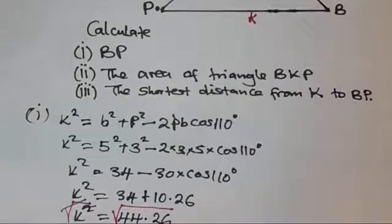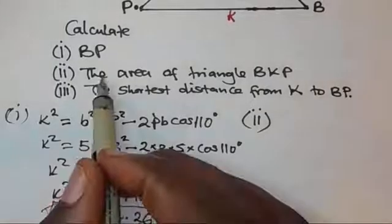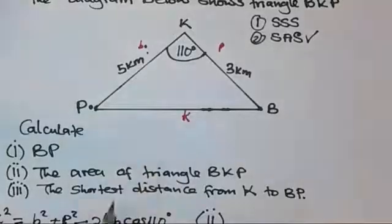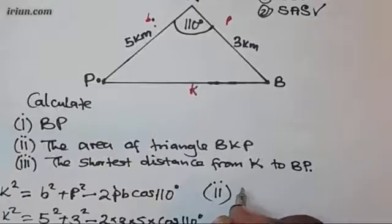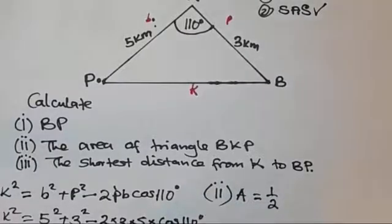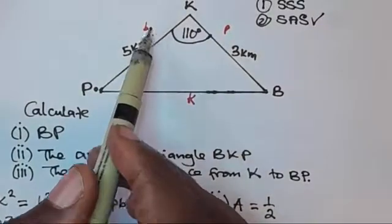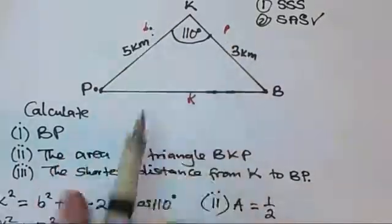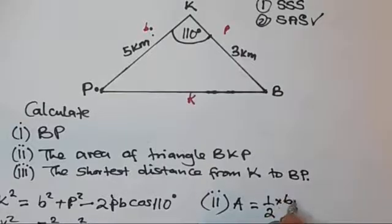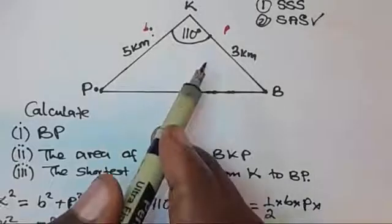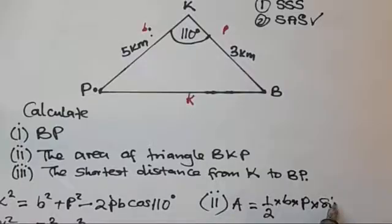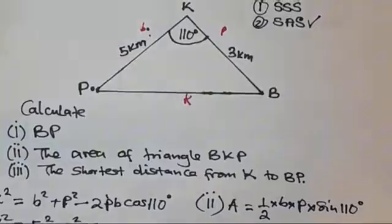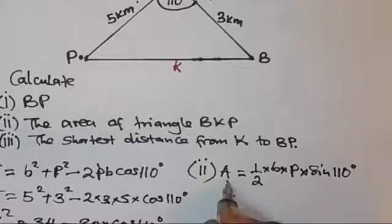Now let's look at the second part: finding the area of triangle BKP. This is a non-right-angled triangle, so we use the formula for the area of a non-right-angled triangle: Area = ½ × b × p × sin(K). We use the given sides and the given included angle. Take note — you must use the given sides, so: Area = ½ × b × p × sin(110°).